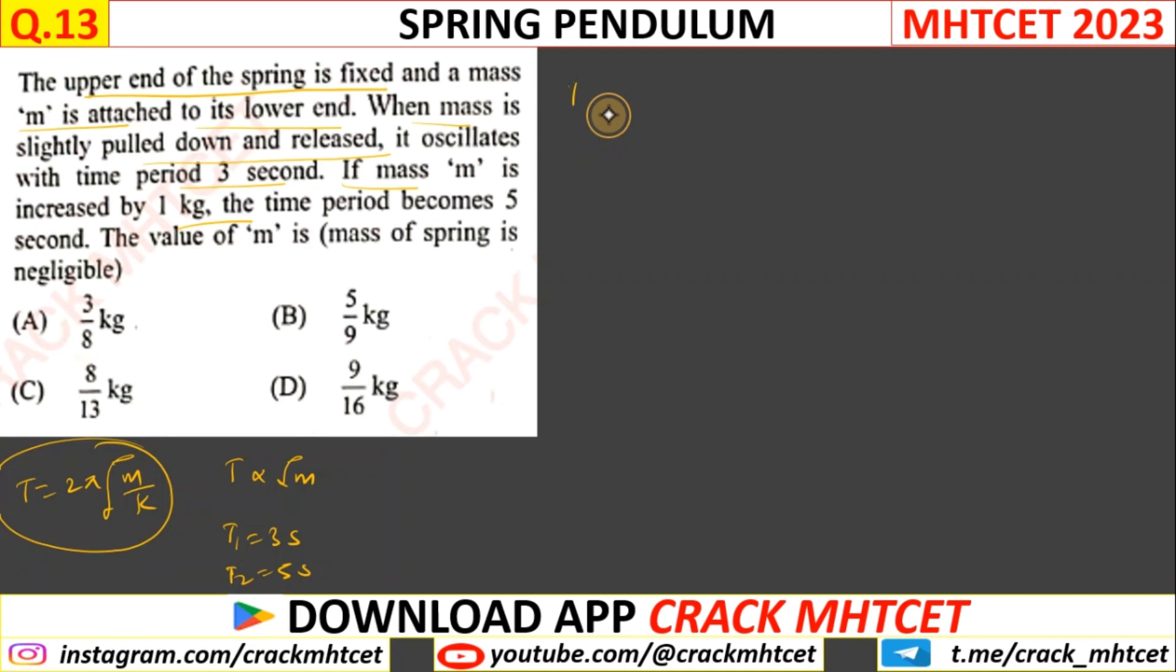So T1 by T2 equal to root of m by m plus 1. So T1 is 3 and T2 is 5. m upon m plus 1 squared is 9 by 25. This becomes 25 by 9, m plus 1 by m.